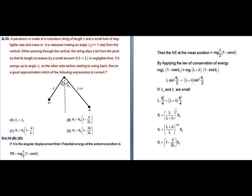This is a case of a simple pendulum. If θ is the angular displacement, the potential energy at the extreme position is mgl(1 − cosθ). At the mean position, this potential energy converts to kinetic energy, so the kinetic energy at the mean position is also mgl(1 − cosθ).